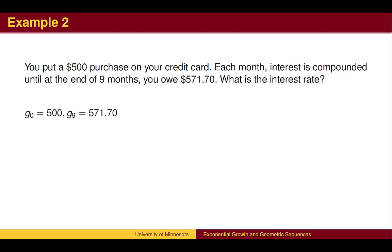This can be thought of as a geometric sequence with the initial term g sub 0 equals 500, and the ninth term is 571.70, one term for each month. We get to each month by multiplying the common ratio. After multiplying 9 times, your loan has increased by a factor of 1.1434. Taking the ninth root of 1.1434, we find the common ratio of 1.015.